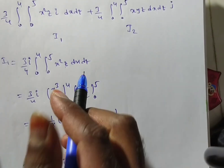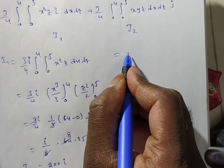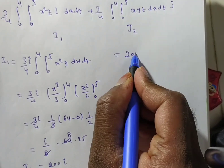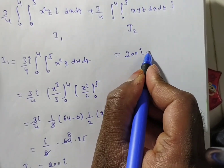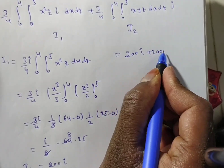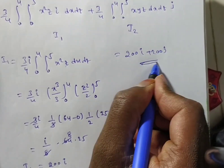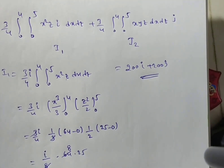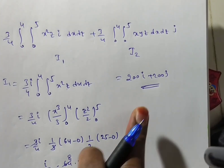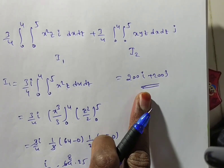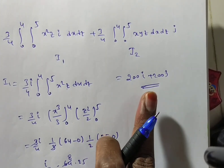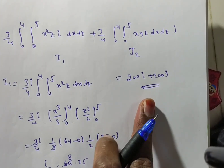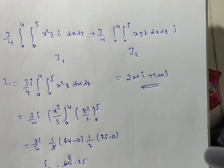So finally the result is 200i + 200j. Observe that the solution of this surface integral is a vector, as expected when integrating a scalar times a unit normal vector. Thank you for watching this video.